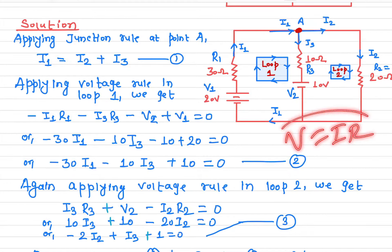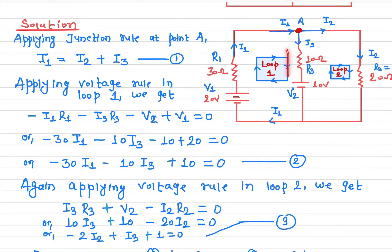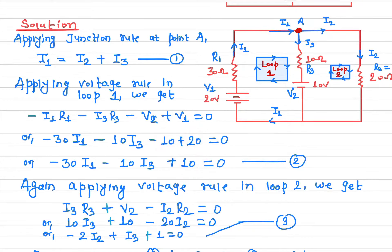The voltage drop is V = IR. We then take the potential difference across the battery. The loop direction goes from positive to negative, so we take it as negative. For the second battery, the travel direction goes from negative to positive, so we take it as positive. This gives us 20 minus 10, which simplifies to 10, giving us equation number two.